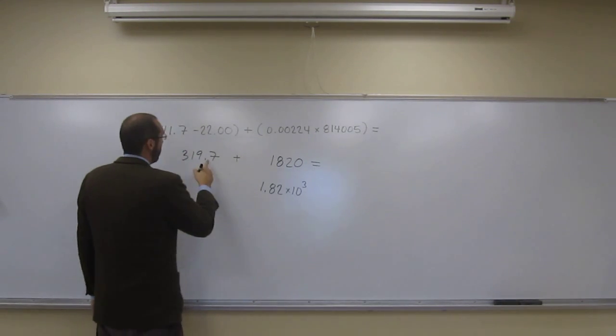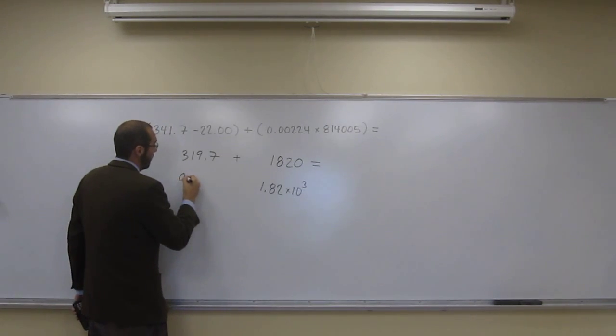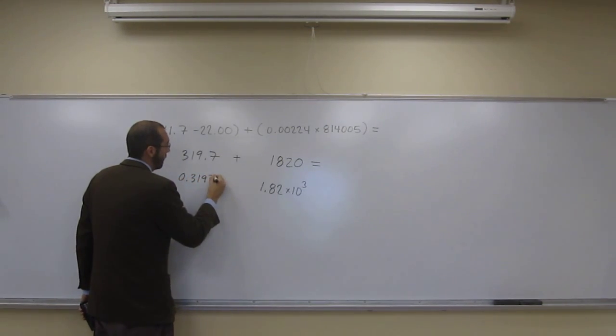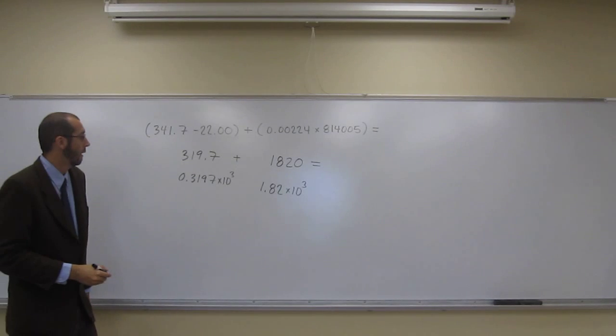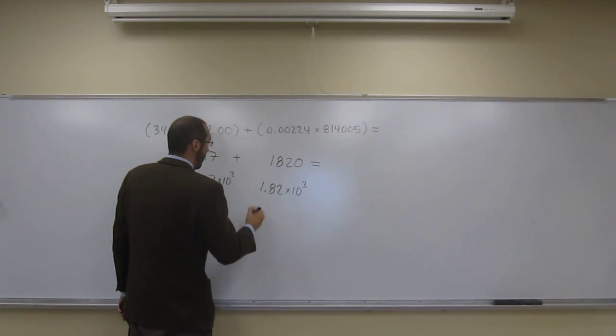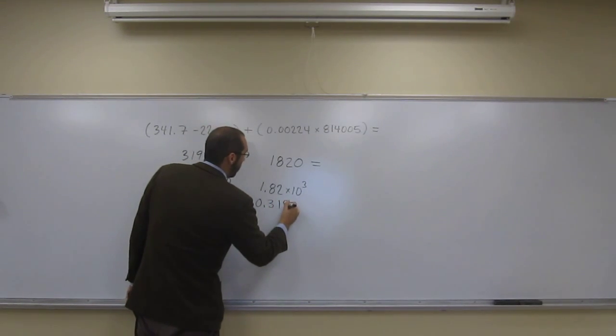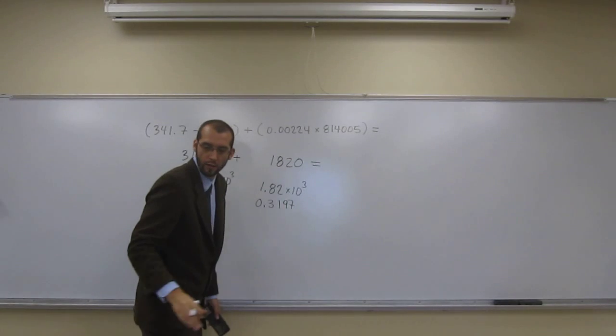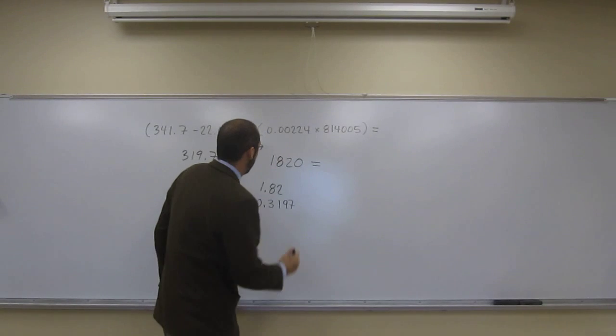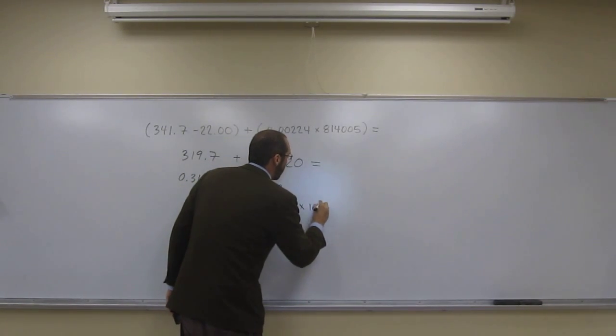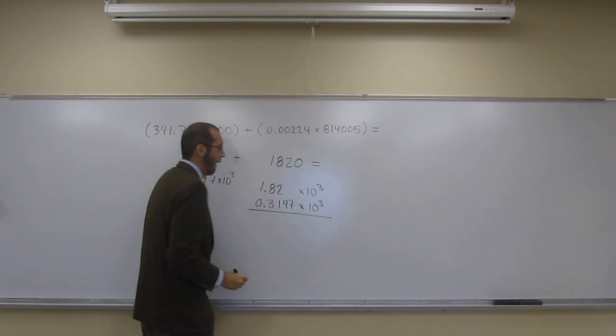And we can add that to 1, 2, 3, right? So that would be 0.3197 times 10 to the third. Is that okay? Does that make sense? So when we do that, 0.3197 times 10 to the third, times 10 to the third, like that, right?